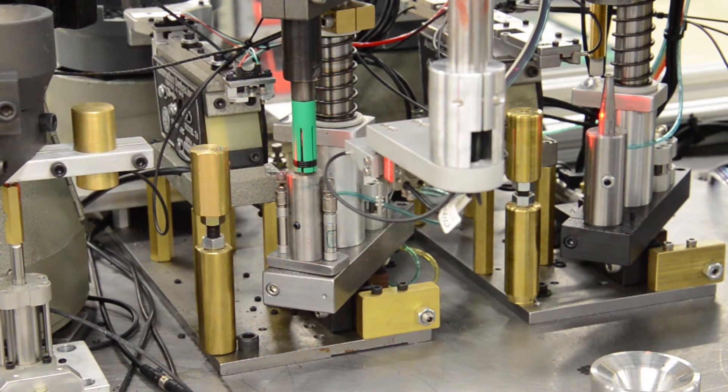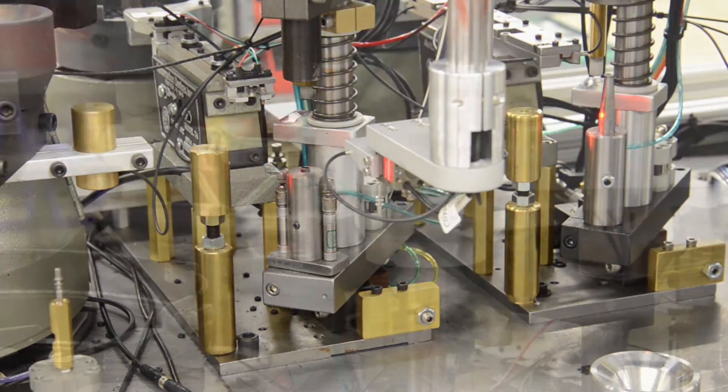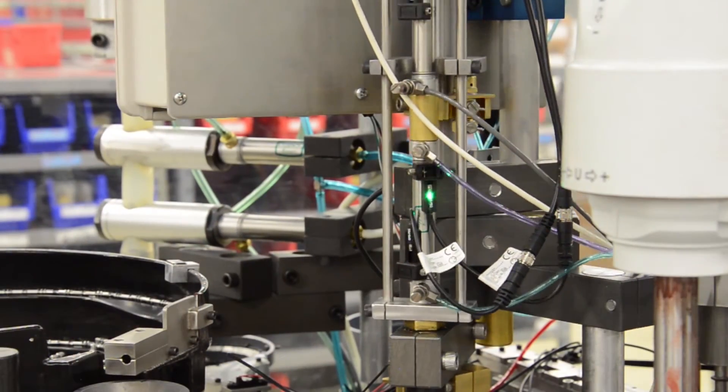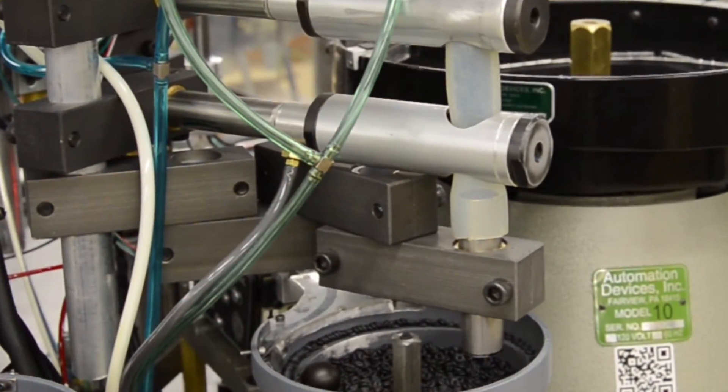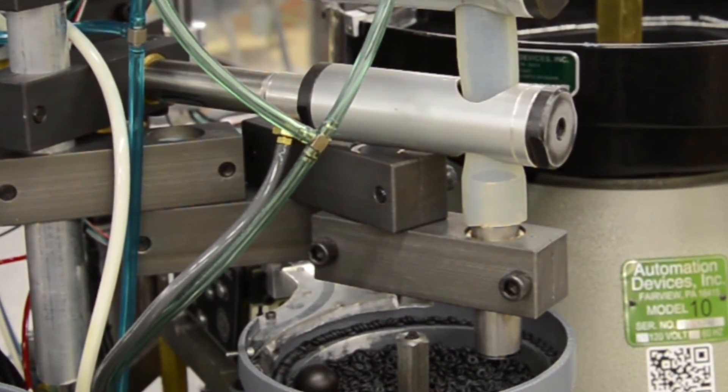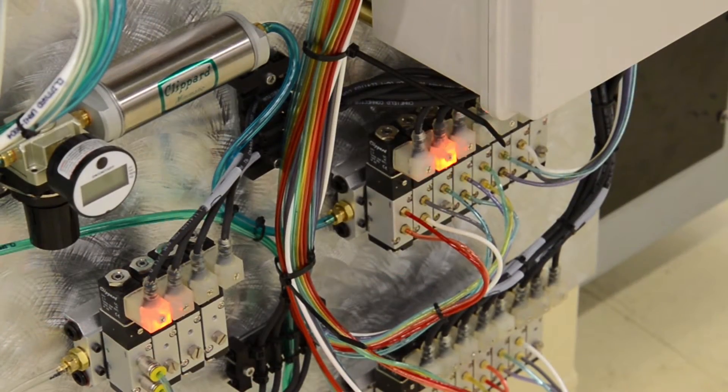This assembly machine utilizes a variety of Clippard automation components including stainless steel cylinders with GMR switches, flow controls, customized pinch valves, and Maxmatic FRLs and valve banks, along with Clippard fittings and tubing.